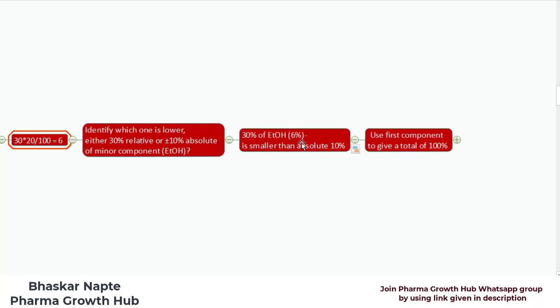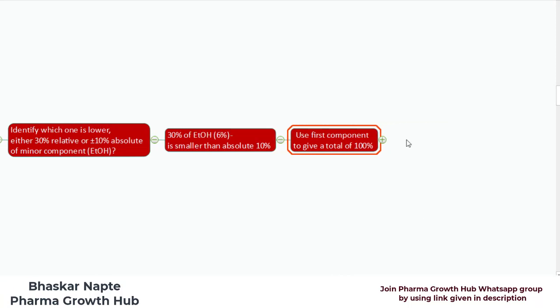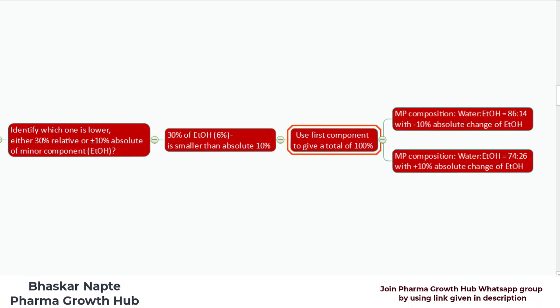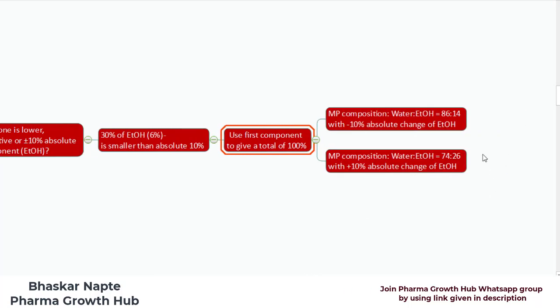When you are going to make a 6% change in the ethanol content, you need to also adjust to 100%, and the first component can be used to give a total of 100%. With this change, the mobile phase composition can be water to ethanol 86 to 14.